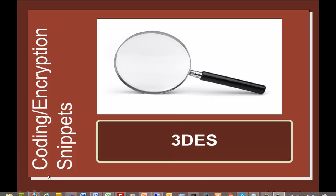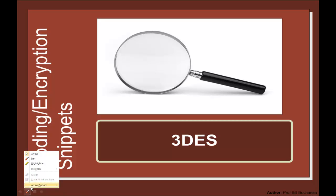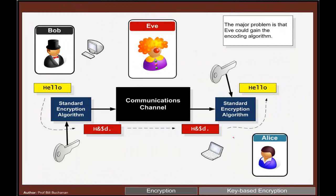This presentation looks at Triple DES or 3DES. Basically, 3DES is a private key encryption method where we use a standard algorithm to encrypt, and then the ciphertext is sent over the communication channel, and the same secret key is used to decrypt it.